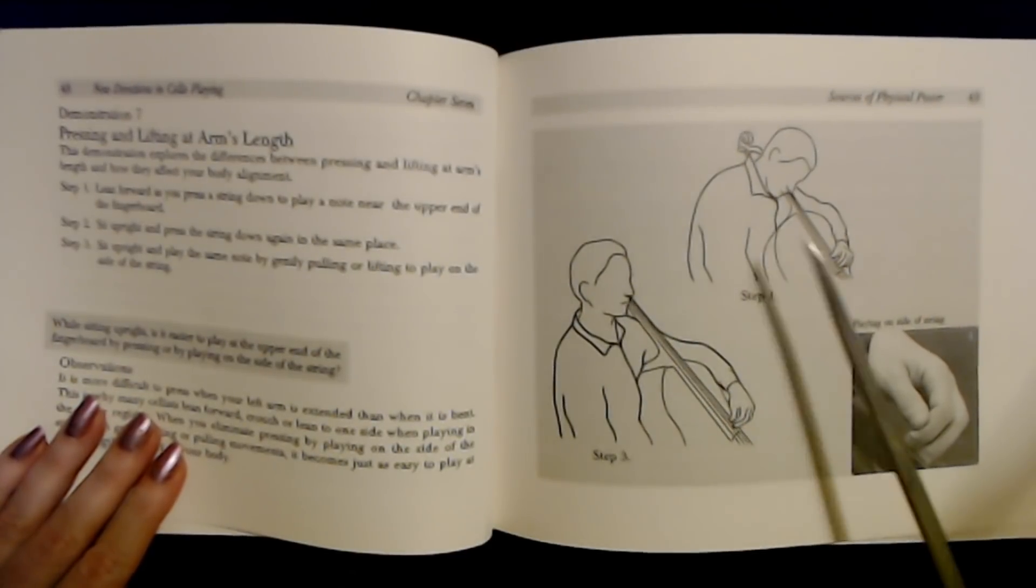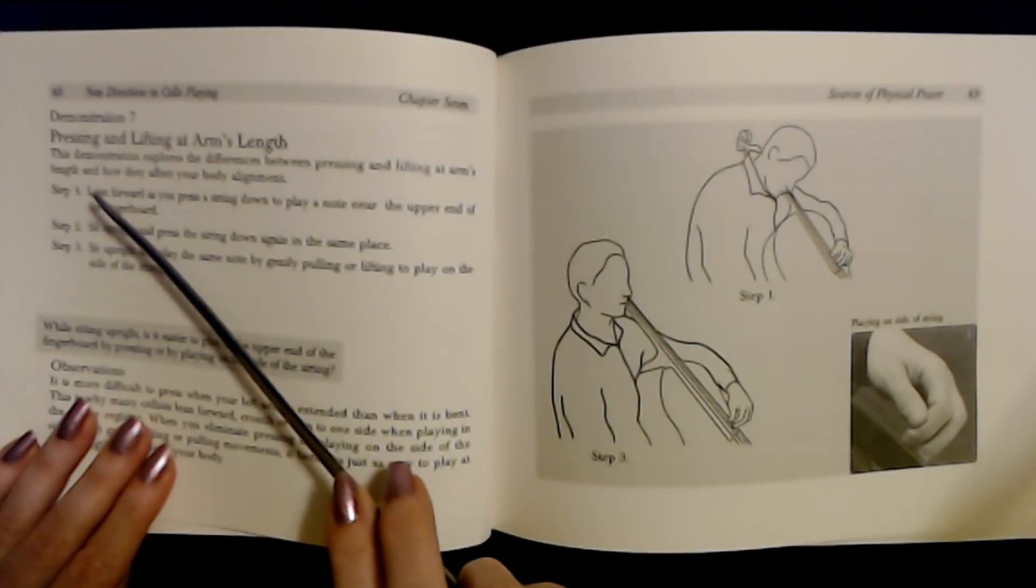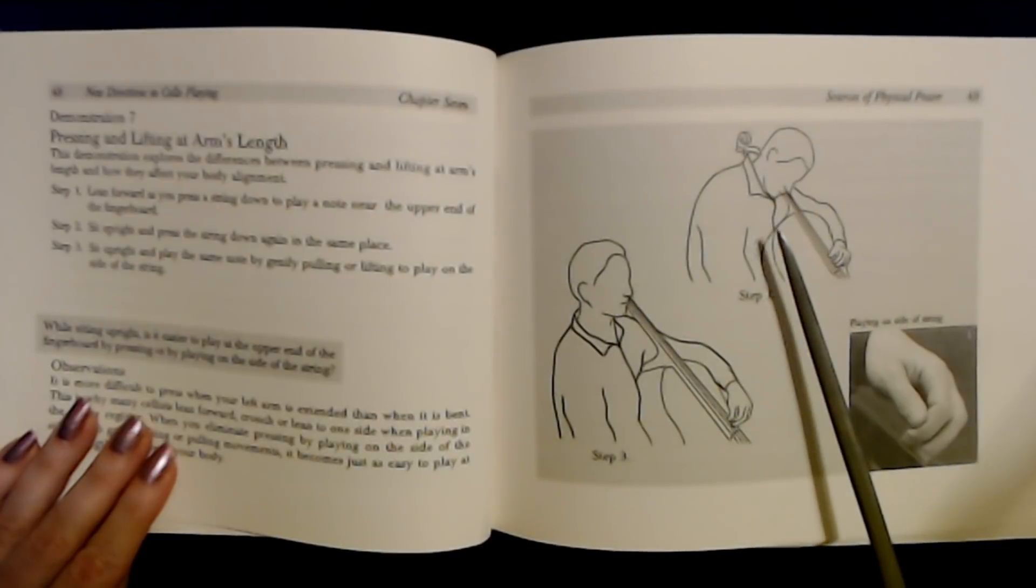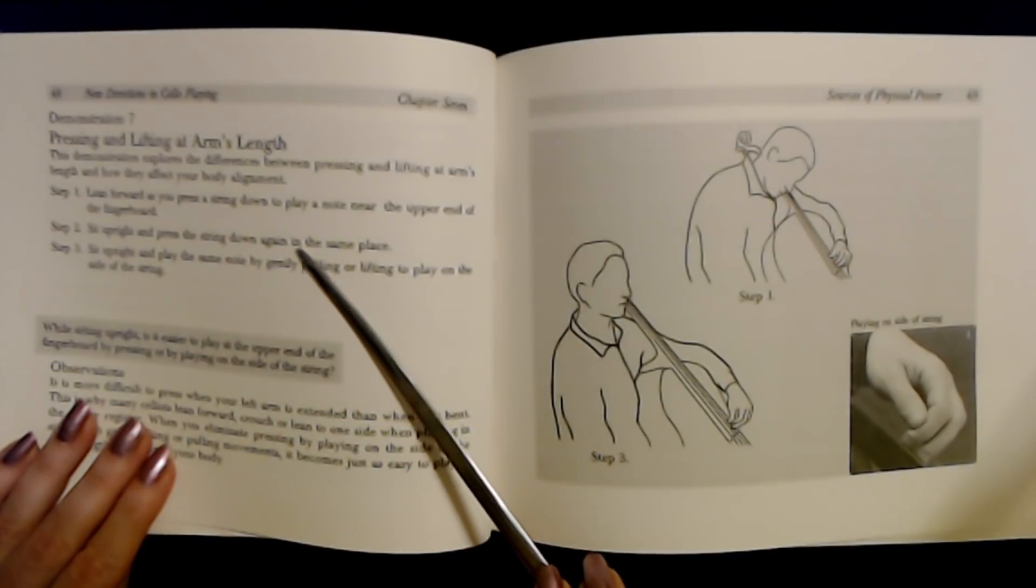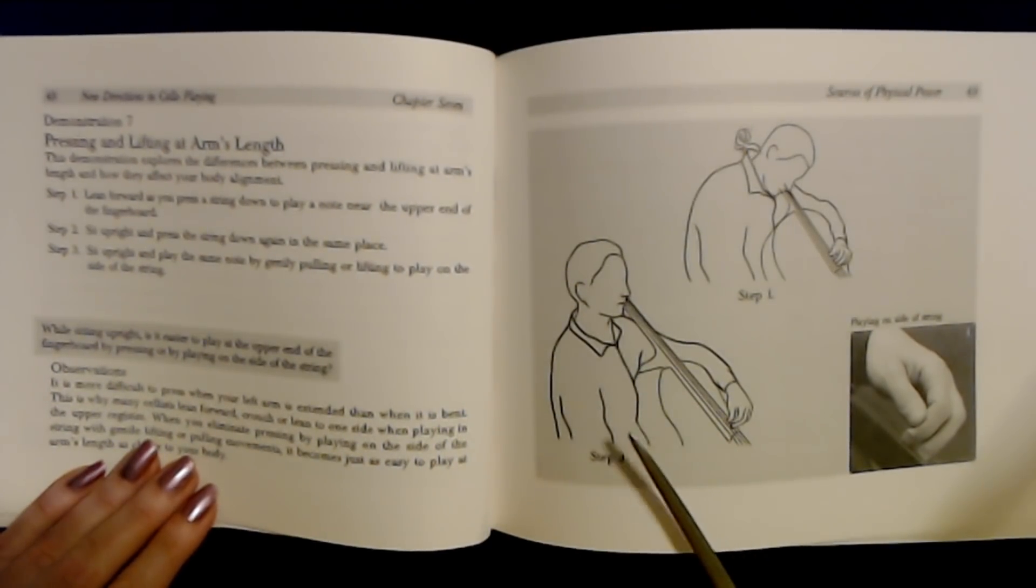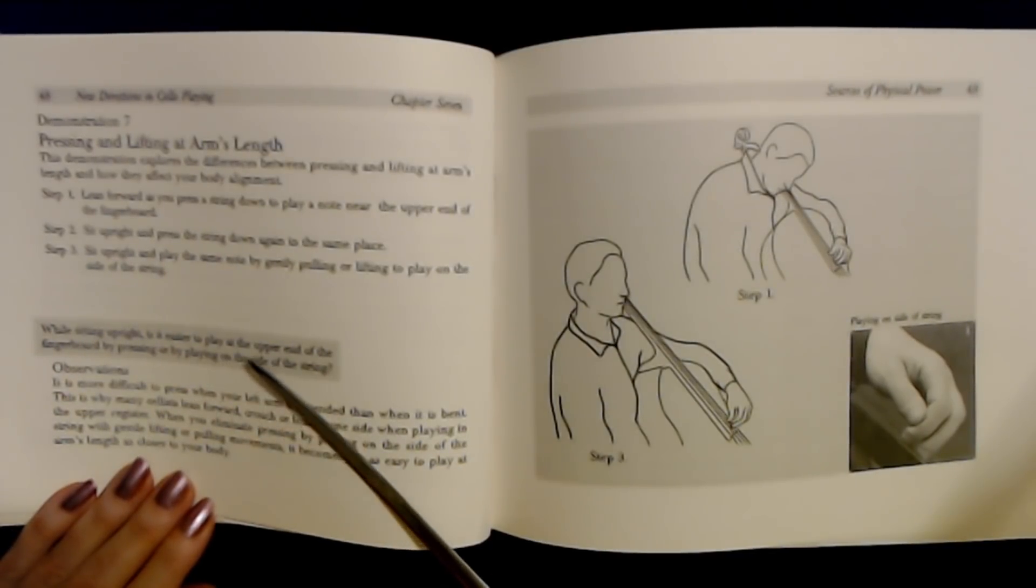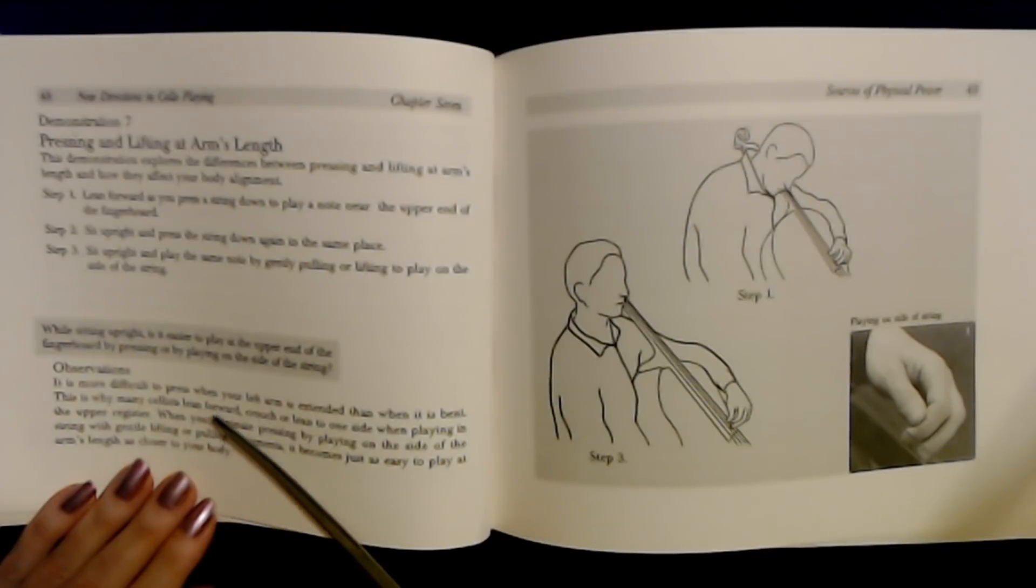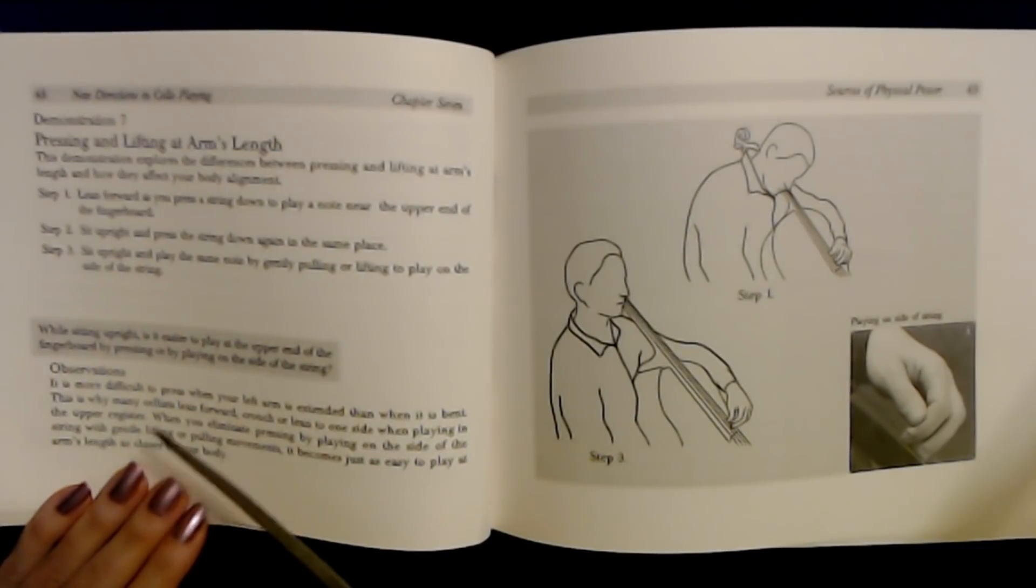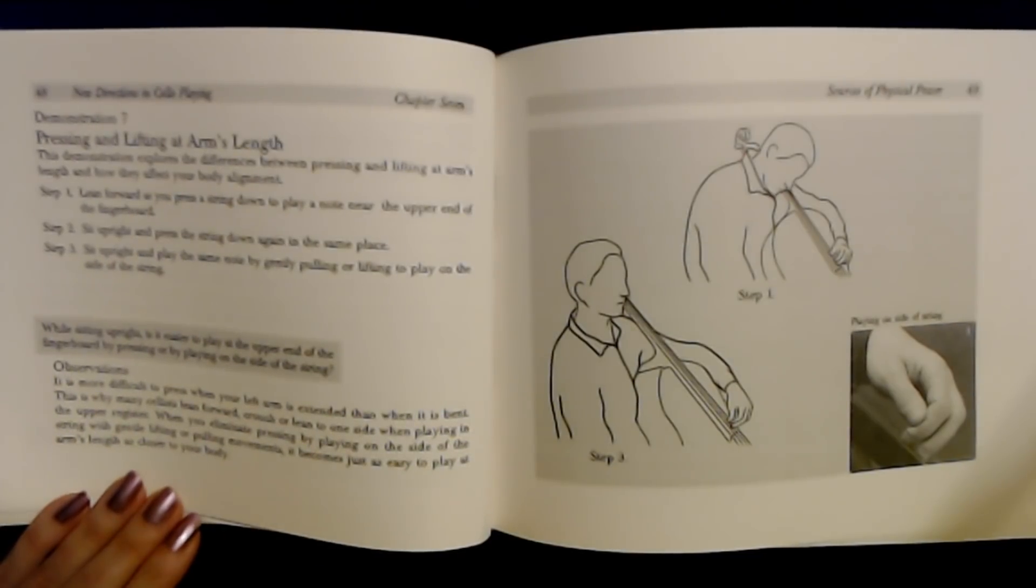Demonstration seven: Pressing and lifting at arm's length. This demonstration explores the differences between pressing and lifting at arm's length and their effect on body alignment. Step one: Lean forward as you press straight down gently with your finger to the fingerboard. Step two: Sit upright as you press straight down again in the same place. Step three: Sit upright as you play the same note by gently pulling and lifting to play on the side of the string. Observations: It is more difficult to press when your left arm is extended than when it is near you. Pressing makes you lean forward, crouch, and lean to one side while playing the upper positions. When you eliminate pressing by playing on the side of the string, the gentle lifting or pulling movements become just as easy to play at arm's length as closer to your body.